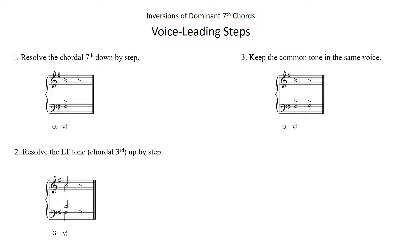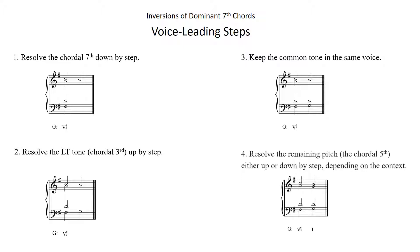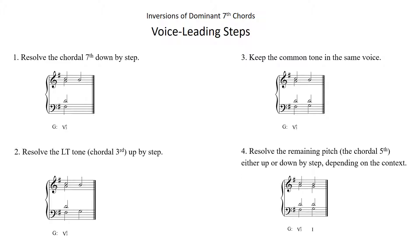Next, keep the common tone in the same voice. The chordal root of the dominant chord is the D, and this is a common tone with the tonic triad, where the D is the chordal fifth of the tonic triad. Finally, resolve the remaining pitch — the chordal fifth — either up or down by step depending on the context. In this example, that chordal fifth is the A in the alto voice, and it is moving down by step to the G instead of moving up by step to B, because the most likely doubling in this particular context is the chordal root for the root position tonic triad.